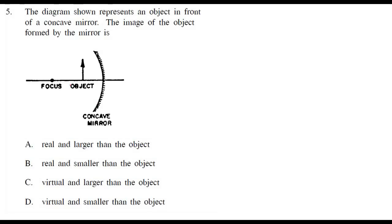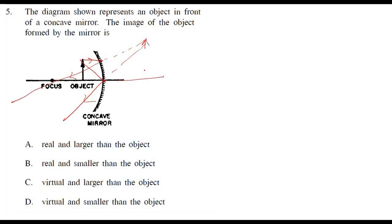This is a concave mirror and the object is between F and P. The first ray, parallel, passes through the focus; another ray hits the pole directly and reflects at the same angle. These two rays are not going to meet, so we extend them in the backward direction and get the image. Since the rays are not meeting, the image is virtual and erect, and virtual with larger size is our answer.